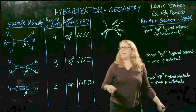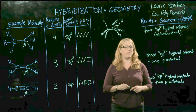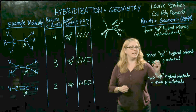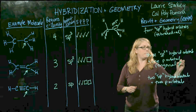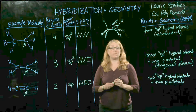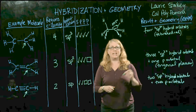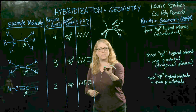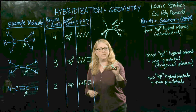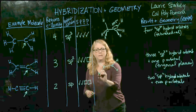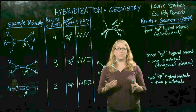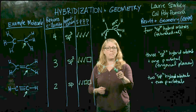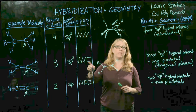For sp2 hybridization, when you have three regions of electron density, to get them as far apart as possible it's going to be a trigonal planar arrangement — about 120 degrees from each other — so this molecule is completely planar. Remember, an sp2 hybridized atom not only has these three hybrid orbitals used for sigma bonding, but it also has a p orbital — the p orbital that was never involved in the hybridization.